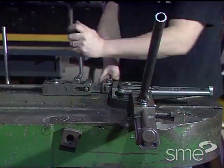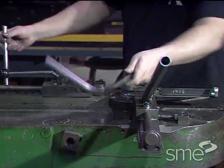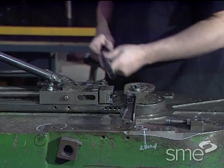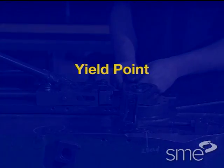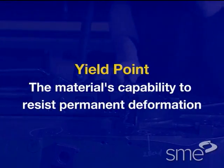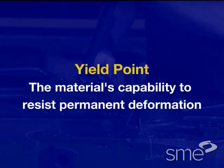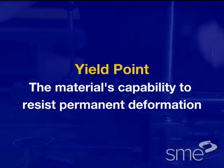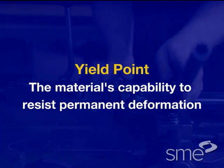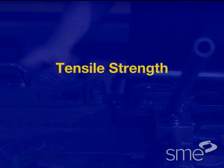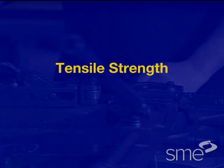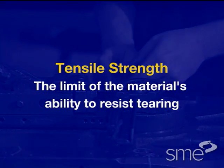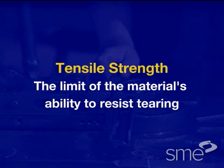For bending to be successful, the tube material must be bent beyond its yield point, which is the material's capability to resist permanent deformation, but not past its ultimate tensile strength, which is the limit of the material's ability to resist tearing.